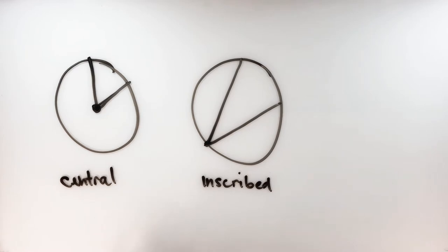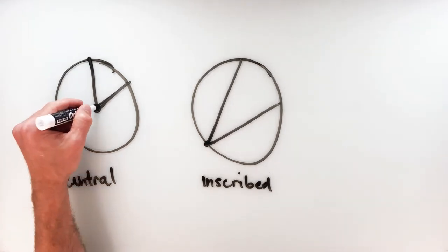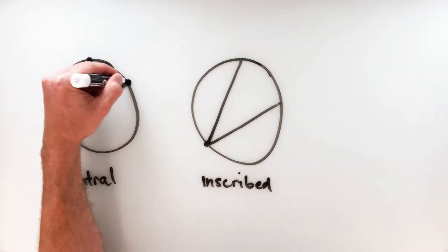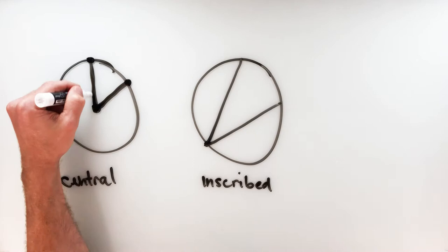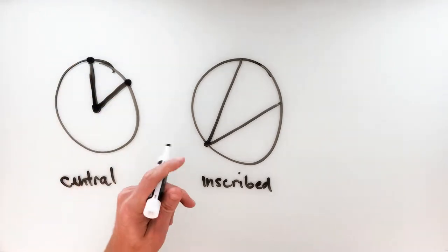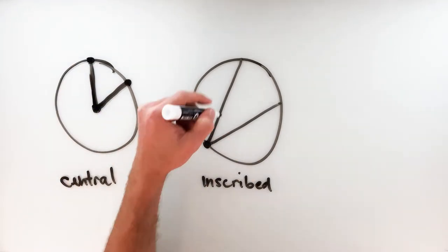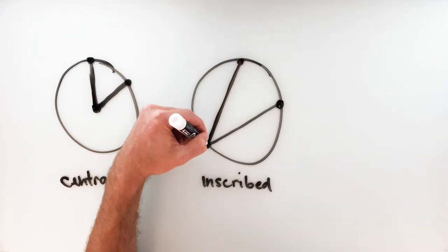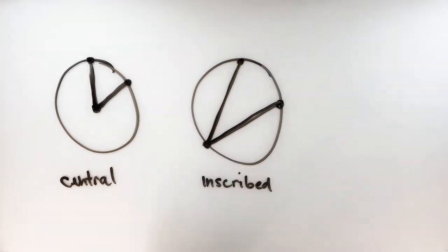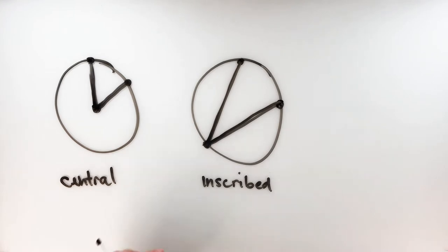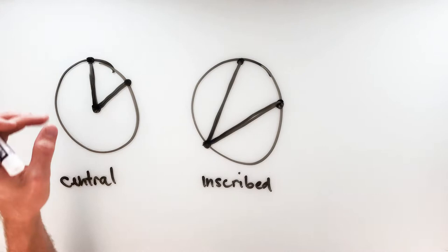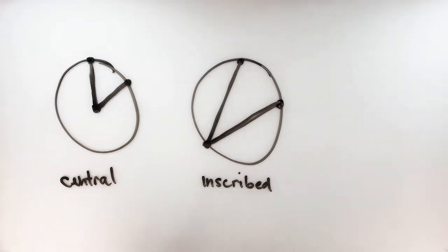Each of these angles are made up of two different types of segments. For the central angle, a radius on either side makes up that angle. On an inscribed angle, each of these segments are chords — a chord is a segment where the endpoints are on the circle but doesn't necessarily go through the center. Each of the sides of the inscribed angle are made up of chords, while each one of the central angle is made up of a radius.